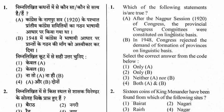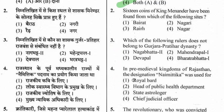Question 2: Sixteen coins of King Menander have been found from which of the following sites? Options are Berat, Nagri, Red Nagar. The right option is Berat.